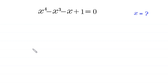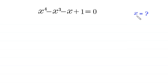Hello, welcome. We need to solve this very nice algebra equation: x to the power 4 minus x cubed minus x plus 1 is equal to 0. We need to find all possible values of x, so let's start.